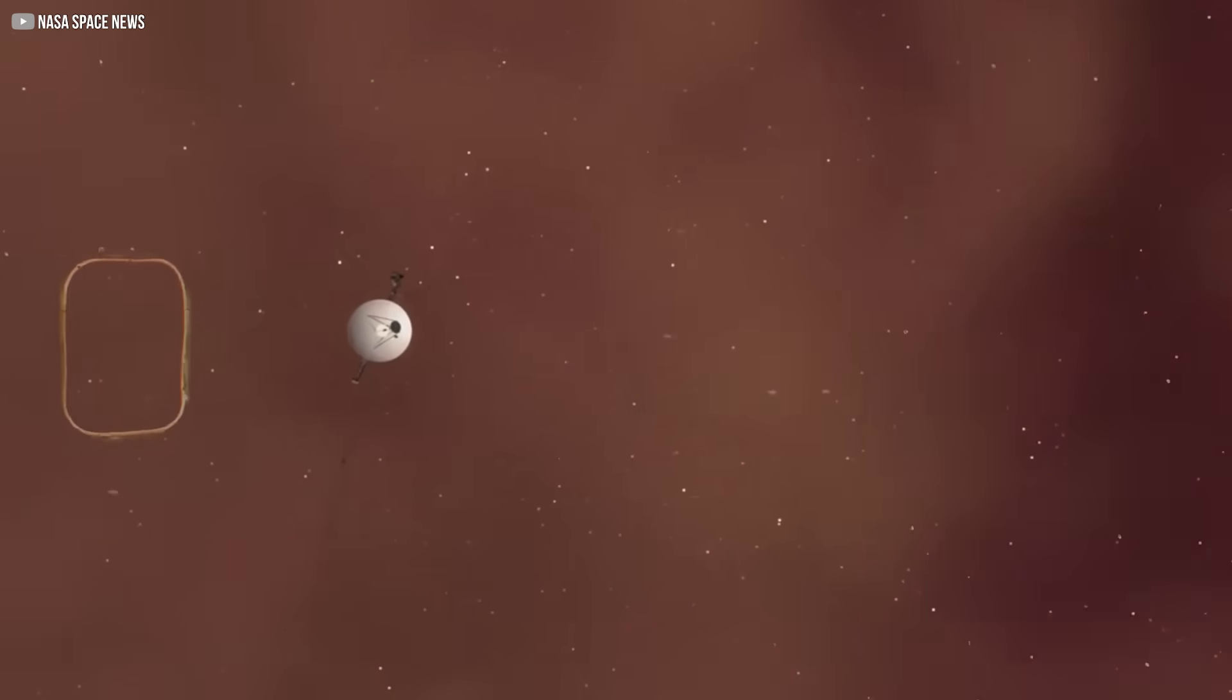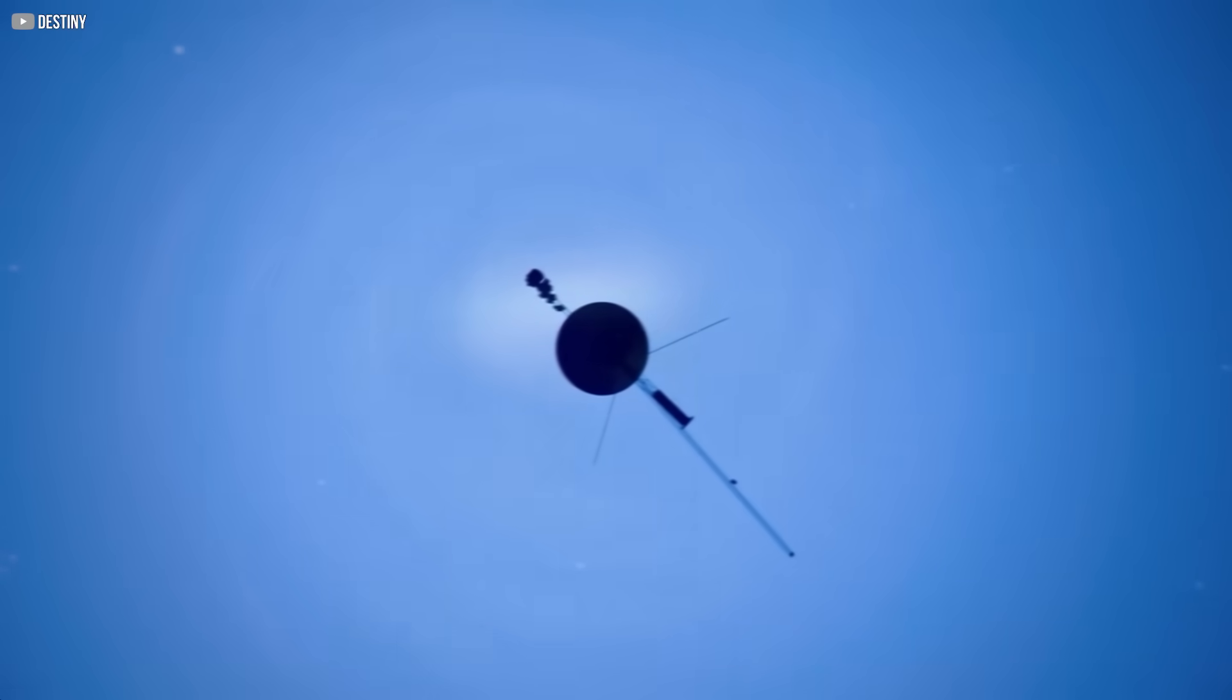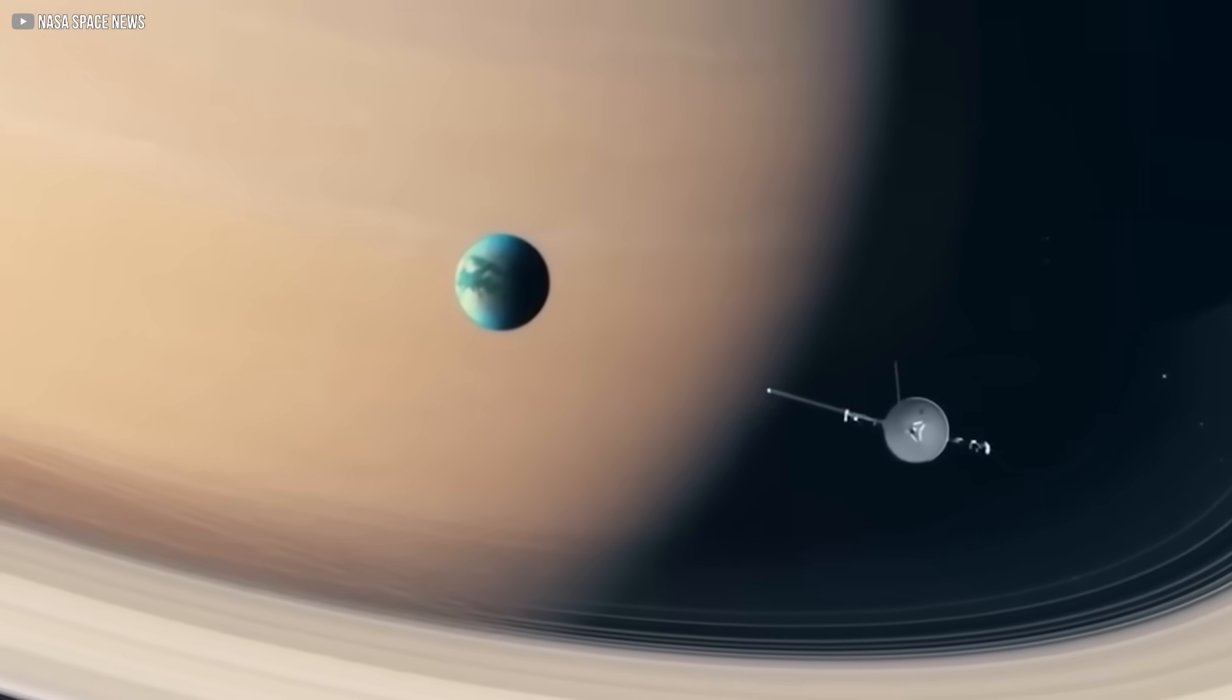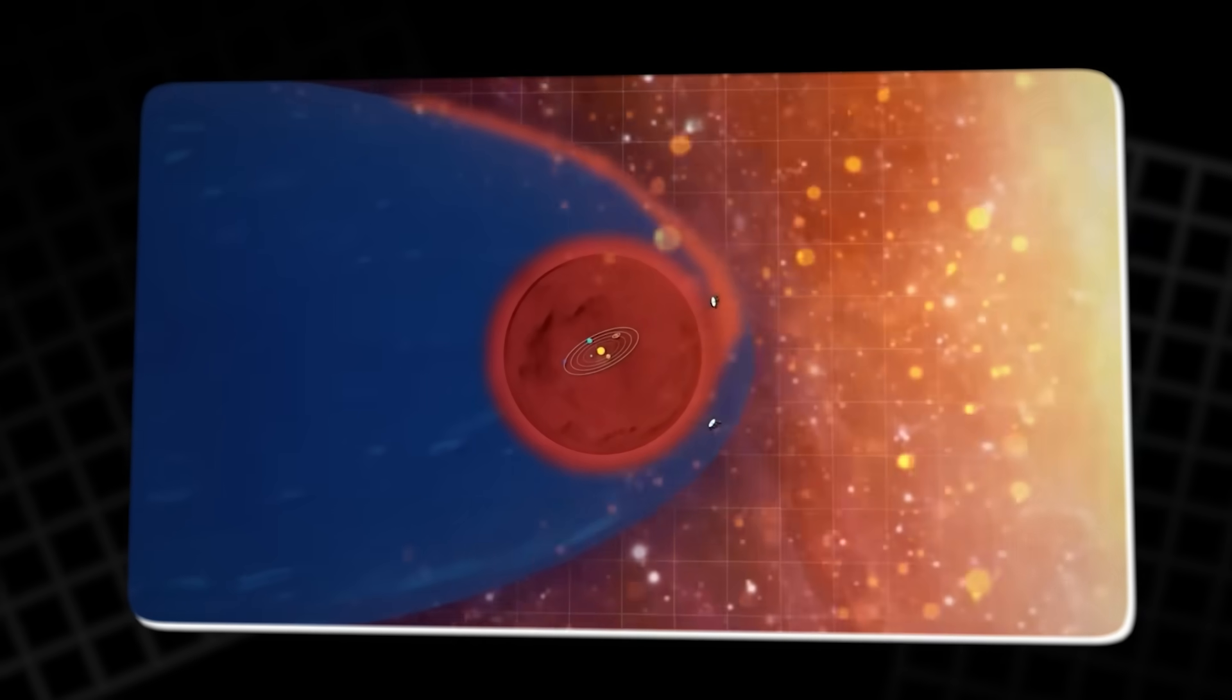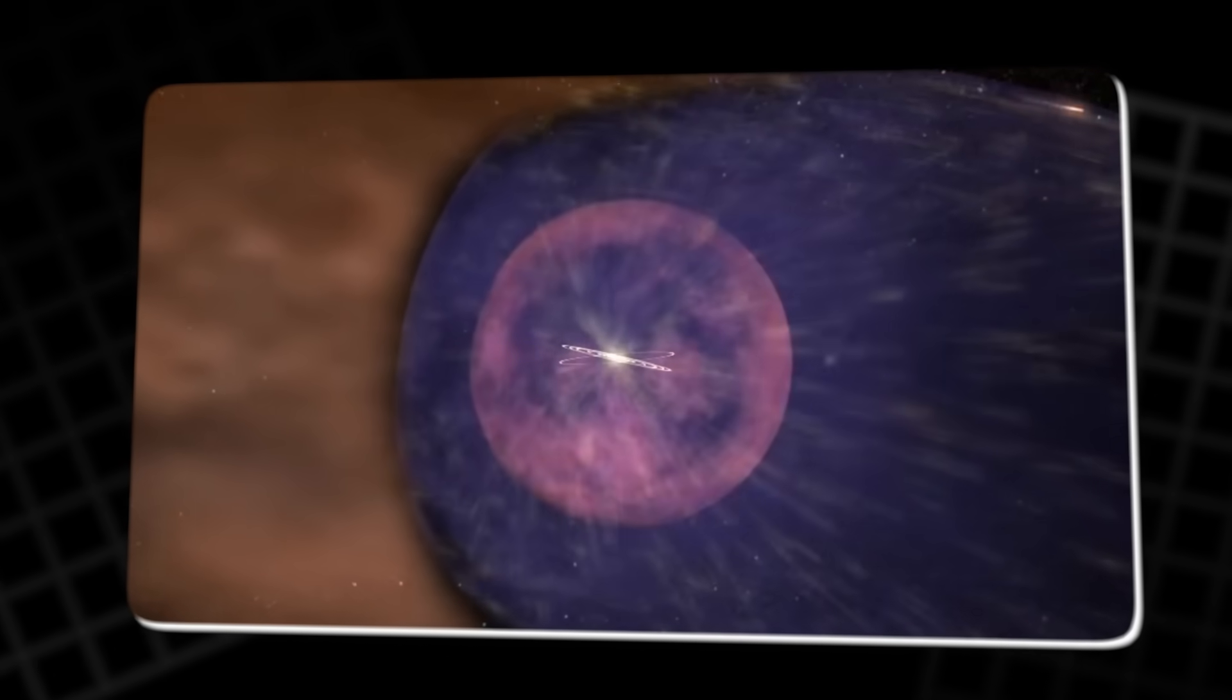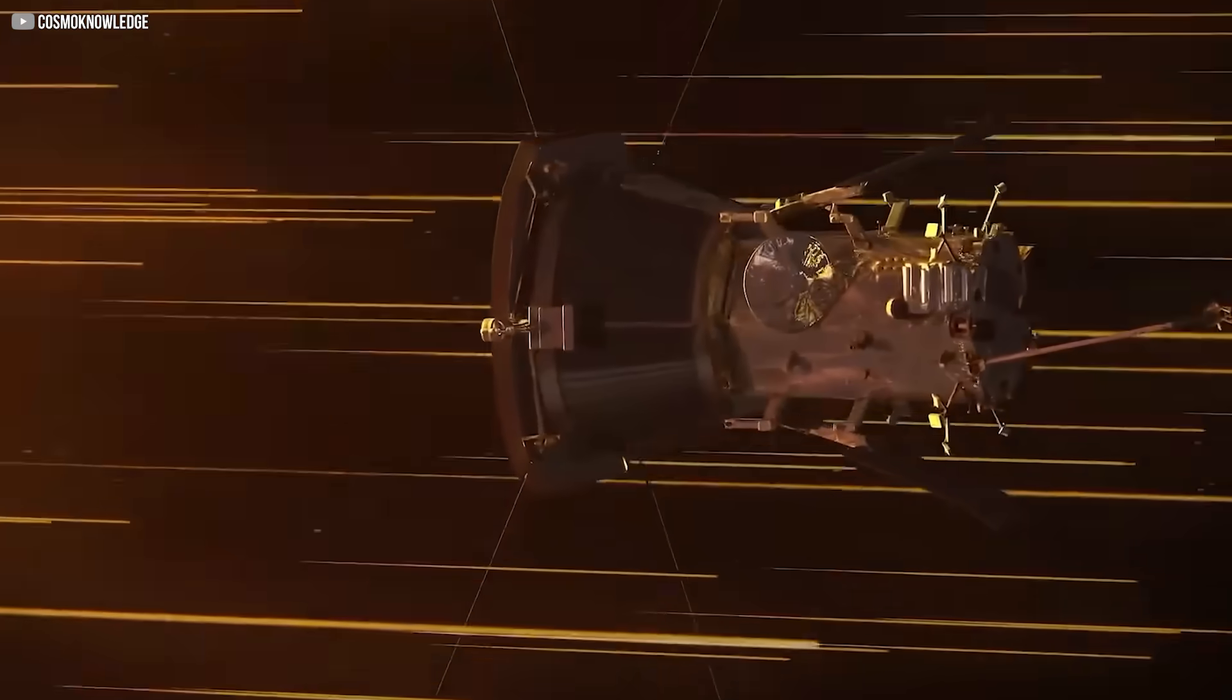This journey begins at a place where no one thought to look, the outer edge of our solar system. When NASA's Voyager spacecraft reached this unexplored frontier, it found something entirely unexpected. At the heliopause, the boundary where the sun's influence fades into the vast emptiness of interstellar space, both probes detected a mysterious superheated zone.